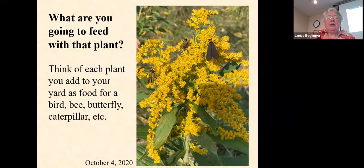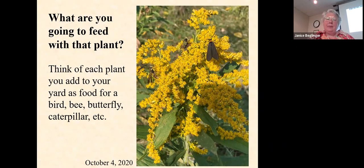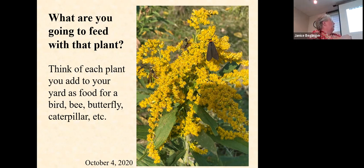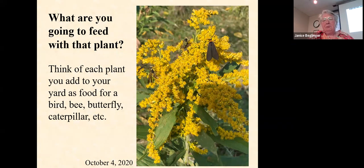When you bring a plant into your garden, you want to know what you're going to feed with it — think of each plant you add to your yard as food for a bird, bee, butterfly, caterpillar, etc. This was a single stem of goldenrod in my garden, and on it you can see a moth, some beetles, a paper wasp, and another little wasp. On one stem, four different insects. Goldenrod, if you remember, is one of those keystone plants — it's very nice to have in the garden in the fall because it feeds a lot of insects for us.